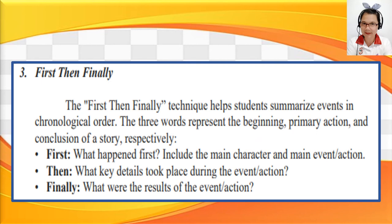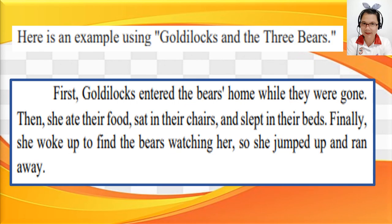Another strategy: First, Then, Finally. This technique helps students summarize events in chronological order. The three words represent the beginning, primary action, and conclusion of a story. First: what happened first, including the main character and main event. Then: what key details took place during the event. Finally: what were the results? Example using Goldilocks and the Three Bears — First, Goldilocks entered the bears' home while they were gone. Then, she ate their food, sat in their chairs, and slept in their beds. Finally, she woke up to find the bears watching her, so she jumped up and ran away.